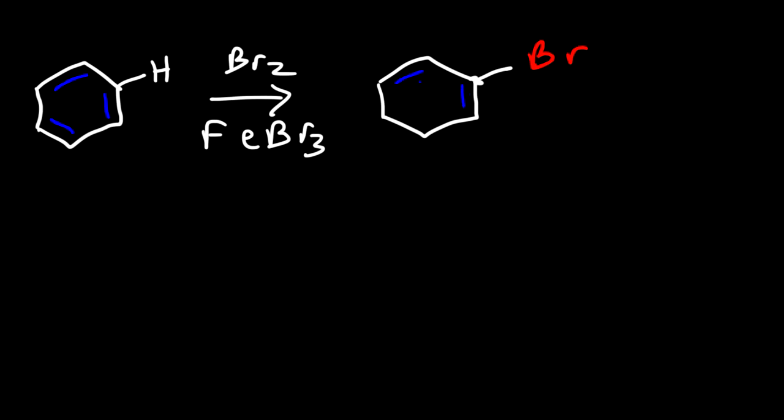Now starting from bromobenzene, we're going to react with an organocuprate, in this case CH3 2 Cu Li. The methyl group is going to displace the bromine atom, giving us toluene as our product.